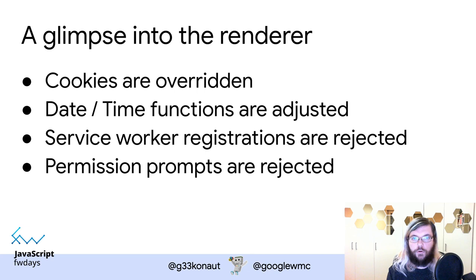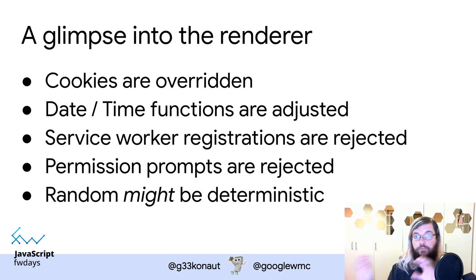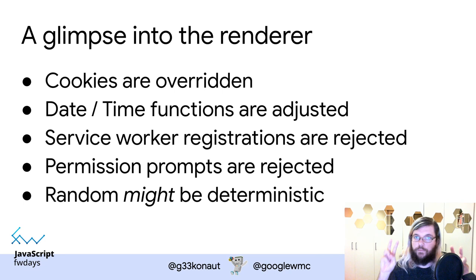Our goal for the web rendering service is to have renders that are as repeatable and deterministic as possible — the same input should produce the same output. To achieve that, we may disable true randomness: random numbers use a fixed seed and are always the same. Some renderers don't do this, but don't rely on Math.random() to be truly random when generating content — Googlebot will likely use similar or identical values over time.